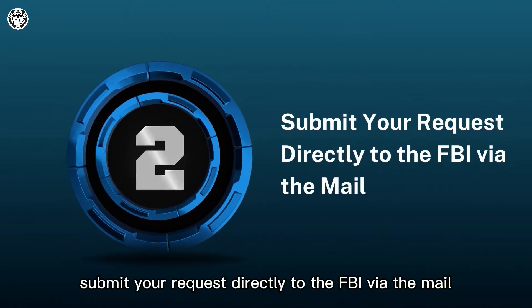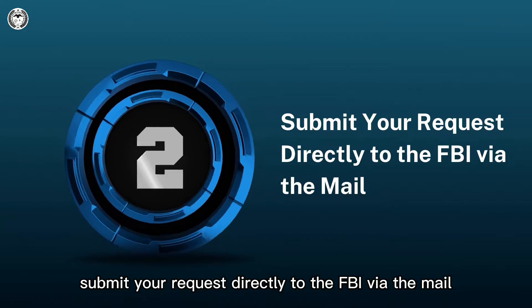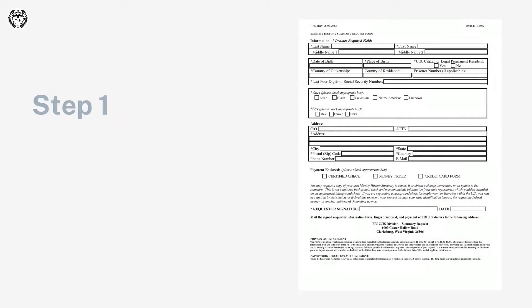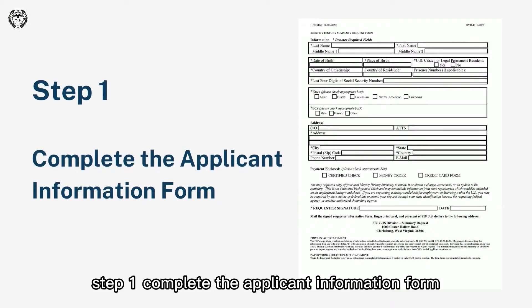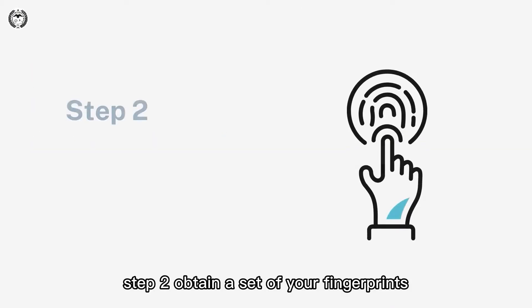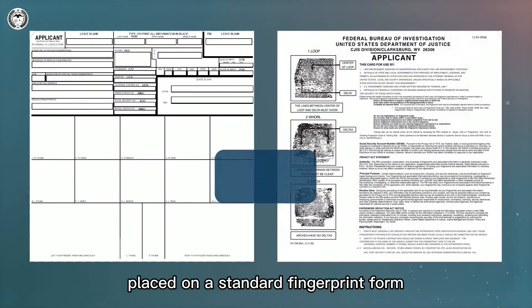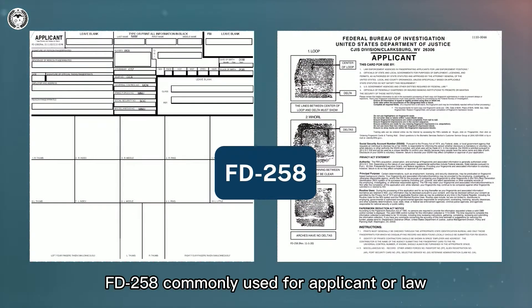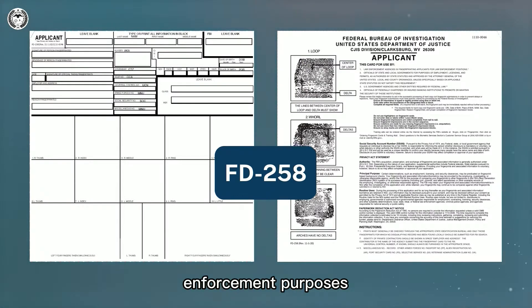Option 2: submit your request directly to the FBI via the mail. Step 1: complete the applicant information form. Step 2: obtain a set of your fingerprints. Your fingerprints should be placed on a standard fingerprint form, FD-258, commonly used for applicant or law enforcement purposes.